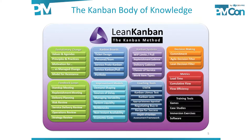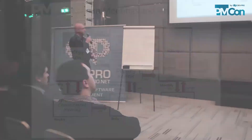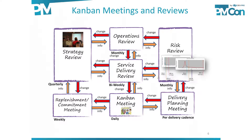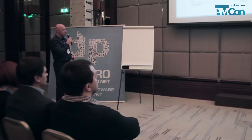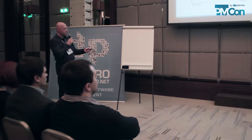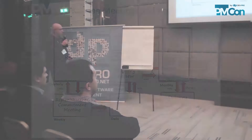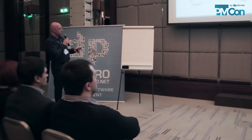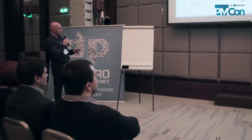These are the different meetings and reviews that happen in Kanban. If you work in a medium to large-size IT organization, you probably have similar meetings. The most common one is similar to a stand-up in Scrum — it's a Kanban meeting that usually happens daily. There are also delivery planning meetings, replenishment and commitment meetings, risk reviews, service delivery reviews which are bi-weekly, operations reviews, and strategy reviews with customers on a quarterly basis.